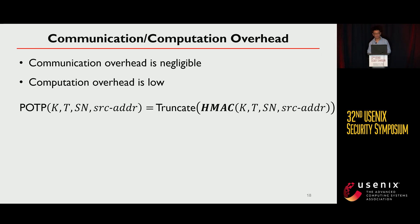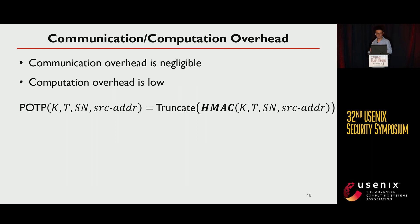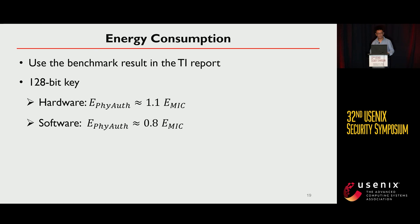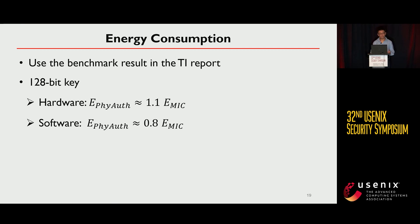We also analyze the communication and computation overhead. Since POTP generation only uses standard Zigbee secure keys such as the link key, no extra communication is involved, making communication overhead negligible. The computation overhead is very low since we only use an HMAC-based, time-based one-time password generation method. For energy consumption, using benchmark results from a TI report, for a 128-bit key with hardware implementation, our scheme's energy consumption is about 1.1× that of the original message authentication scheme, and for software implementation, about 0.8× that of the original scheme.